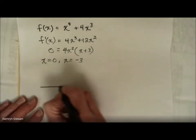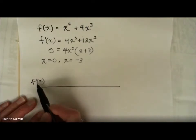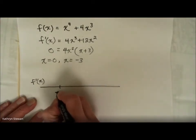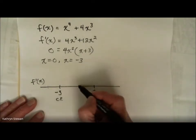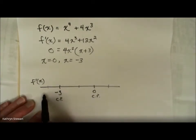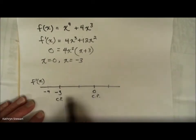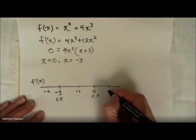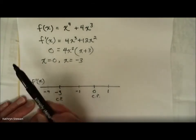Those are just critical points — places where the derivative of this function is zero. So I'm going to make a number line and do some analysis of the derivative on either side of these interesting points. I'll put negative 3 and 0 on the number line, then plug in test values: negative 4 (less than negative 3), negative 1 (between negative 3 and 0), and 1 (greater than 0).